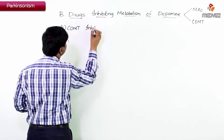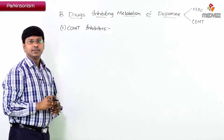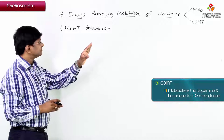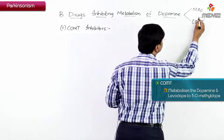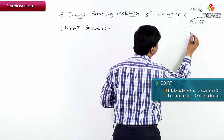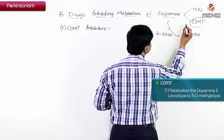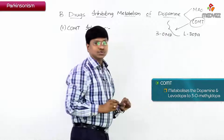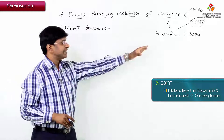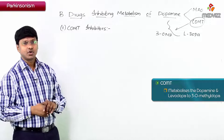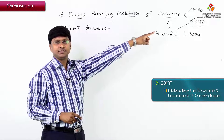The COMT enzyme metabolizes both dopamine and levodopa to 3-O-methyldopa (3-OMD). So in the presence of this enzyme, the levels of dopamine and levodopa are reduced as they get converted into 3-O-methyldopa.